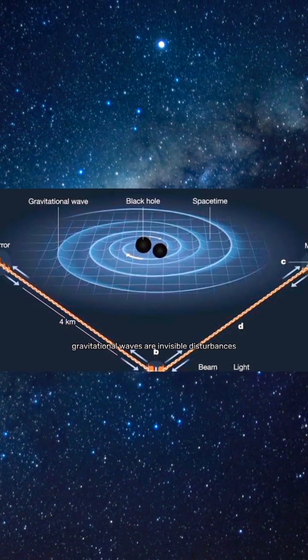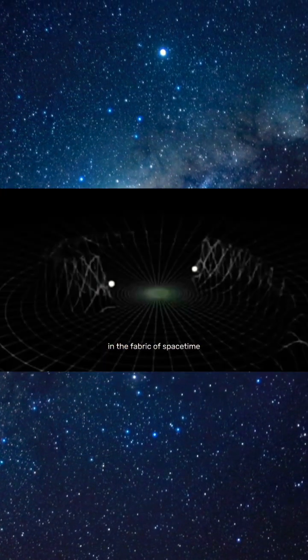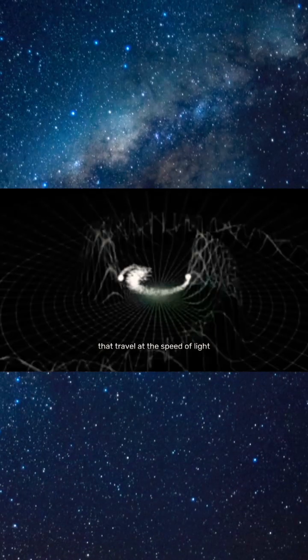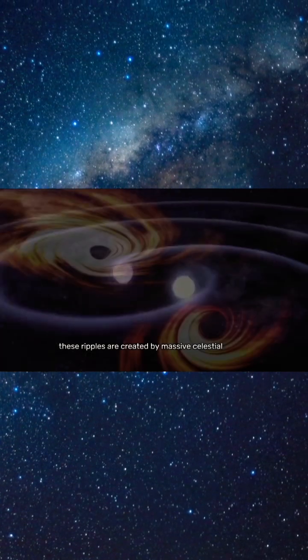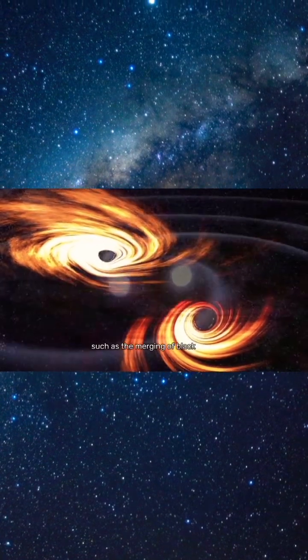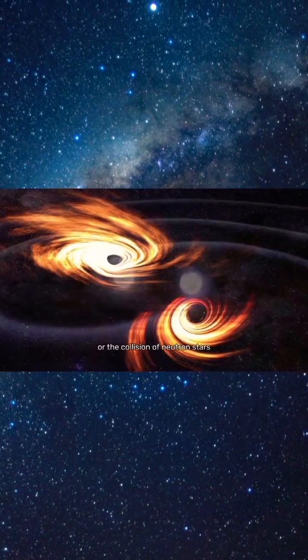Gravitational waves are invisible disturbances in the fabric of space-time that travel at the speed of light. These ripples are created by massive celestial events such as the merging of black holes or the collision of neutron stars.